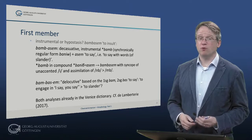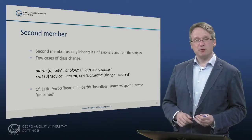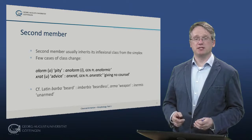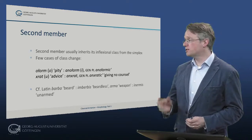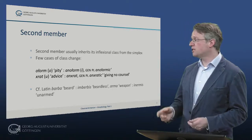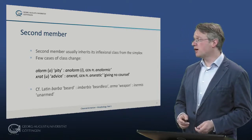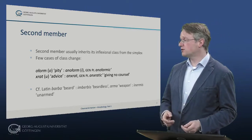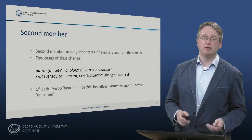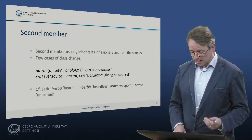Final members of compounds usually retain their inflectional class, but there are a few cases where it differs from the simplex. For example, vororm – pity – is a stem in O, but the compound an-vohorm is a stem in I, visible in the genitive plural an-vohormiz. The same goes for hrat – advice – a stem in U, where an-hrat has genitive plural an-hratiz, again a stem in I meaning giving no counsel. This reminds us of similar phenomena in Latin, such as barba/imberbis, arma/inermis, and might continue an archaism in Armenian, though it is not very productive.